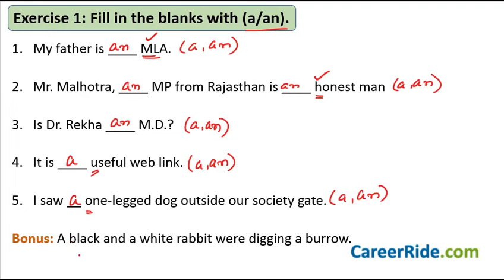Here's a bonus sentence: 'A black and a white rabbit were digging a burrow.' Notice there are two A's here. This is because we are talking about two separate rabbits. In spot-the-error type questions, examiners may try to confuse you on this. Pay attention when we solve such questions — more practice will make the applications clearer.